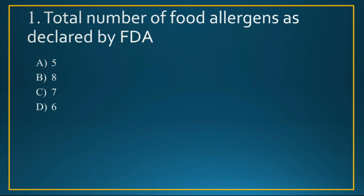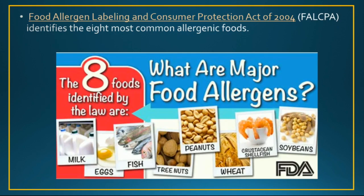Q1: The total number of food allergens as declared by FDA are — 5, 8, 7, or 6? The FDA has declared a total of 8 food allergens, which are milk, egg, fish, tree nuts, peanuts, wheat, shellfish, and soybeans. The FDA has enforced FALCPA, which stands for the Food Allergen Labeling and Consumer Protection Act of 2004. FALCPA identified these 8 common allergenic foods and states that food labels should clearly indicate the food source name of any ingredients among the 8 allergens, so manufacturers must disclose their presence on the label.